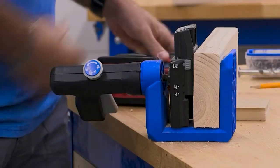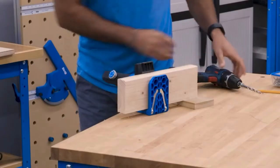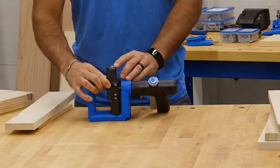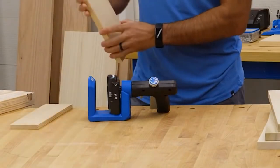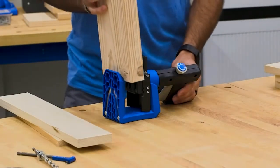The unique design of the pocket hole jig 520 Pro makes the jig adaptable to any workspace and any project. You can use the 520 Pro on a work surface or clamp the jig right onto the project or material you are working on.